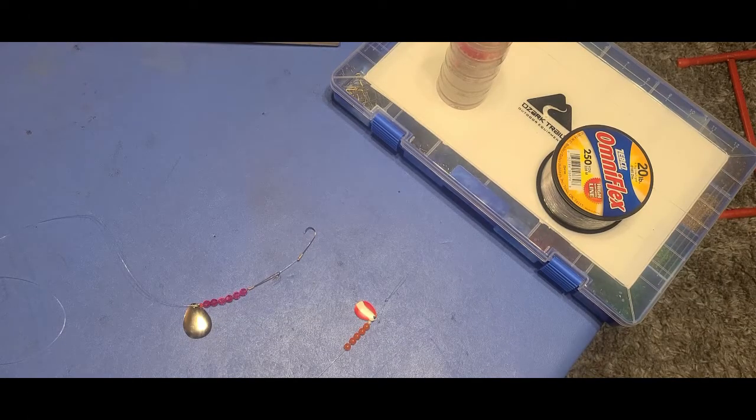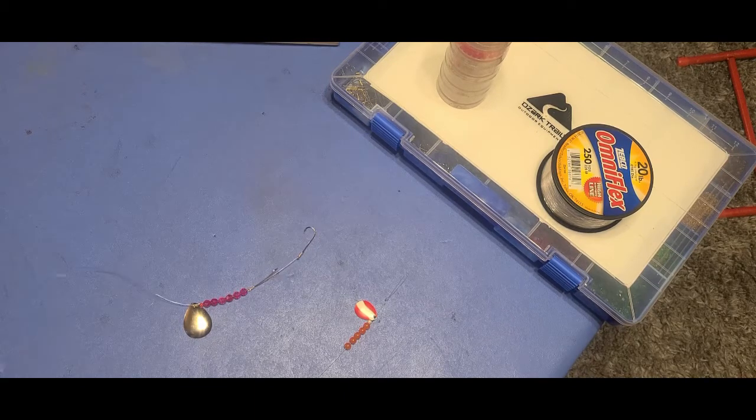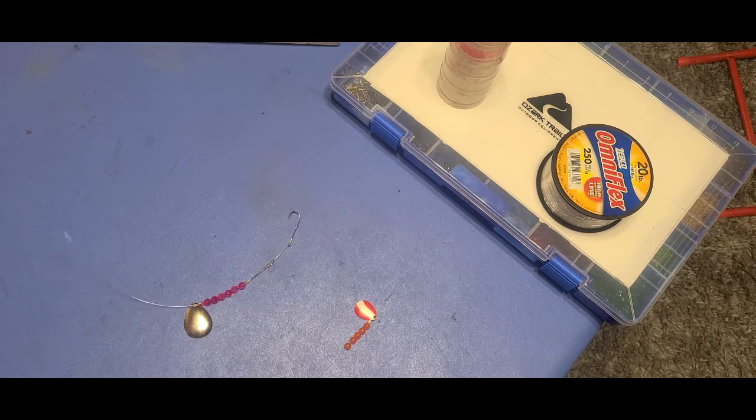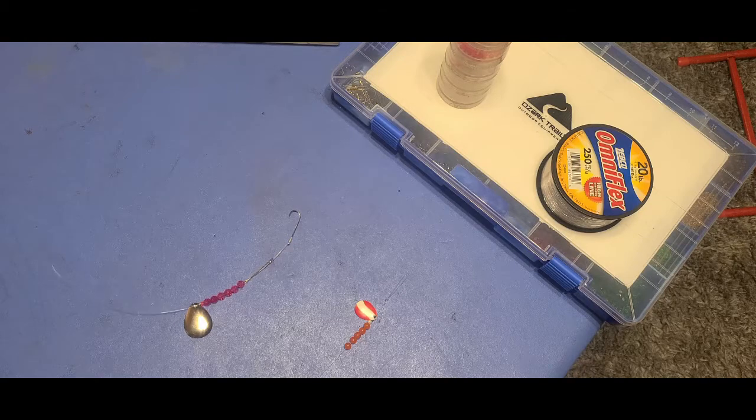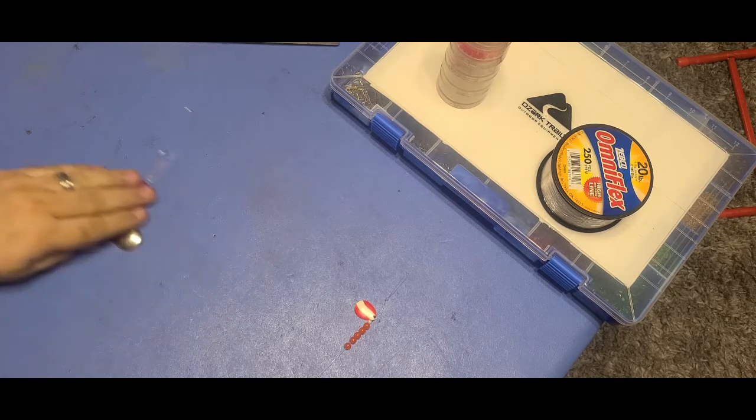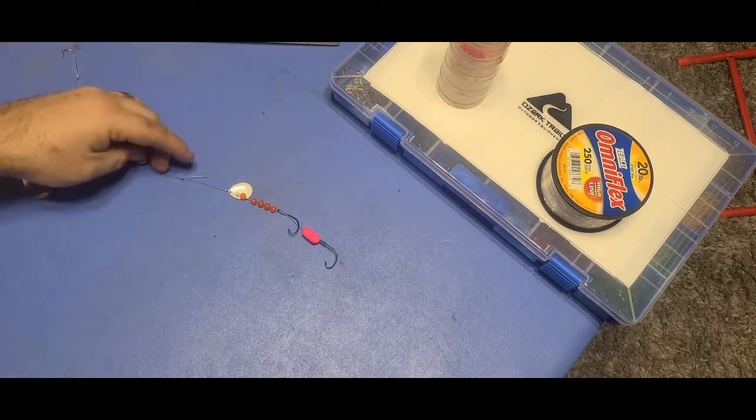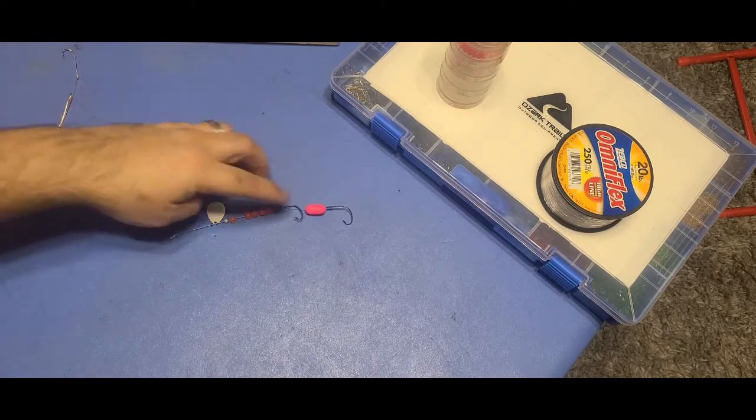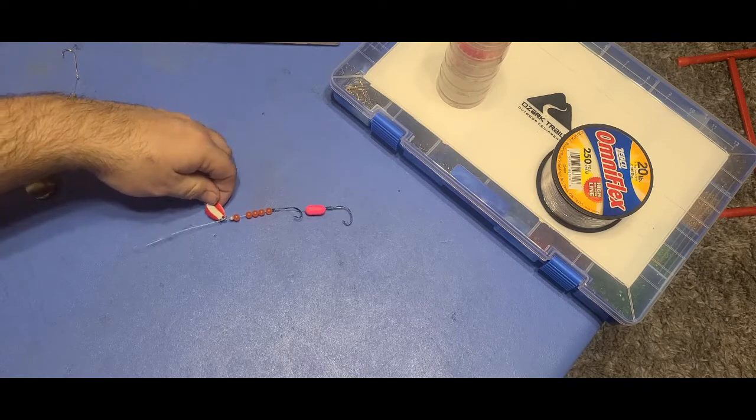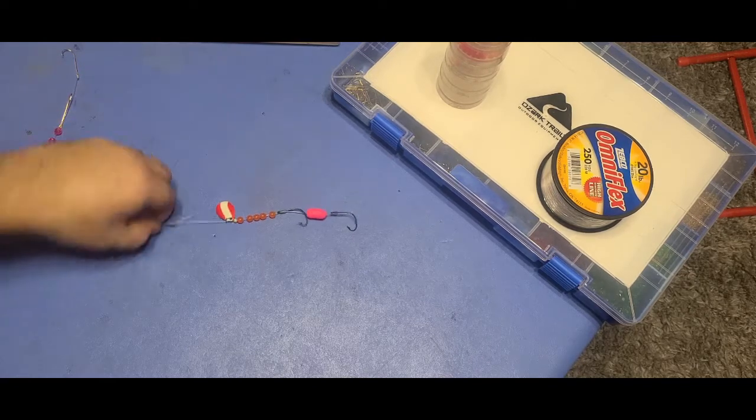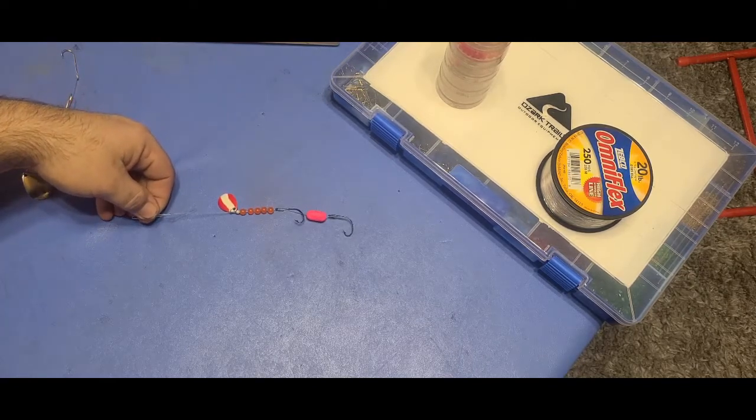Welcome back to Medic 81. Today we're working on night crawler harnesses. My entire life we have always made night crawler harnesses that look like this: about six inches long, six beads or so, sometimes a float, a clevis, a spinner tied off the top. This is what I'm used to making.